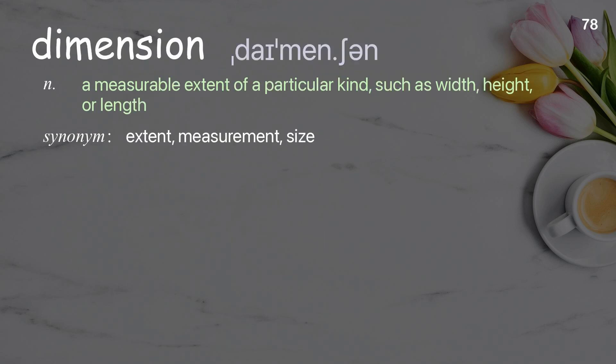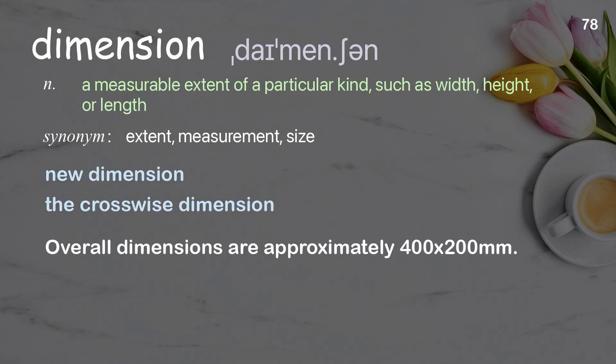Dimension: a measurable extent of a particular kind, such as width, height, or length. Examples: new dimension; the crosswise dimension. Overall dimensions are approximately 400 by 200 millimeters.